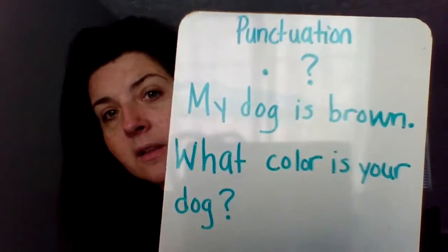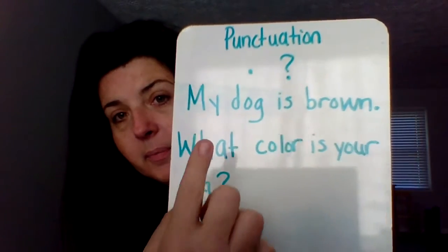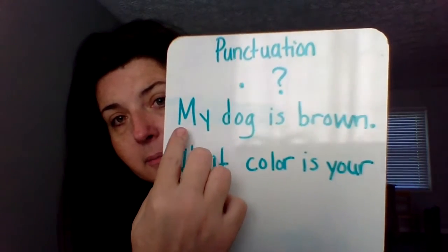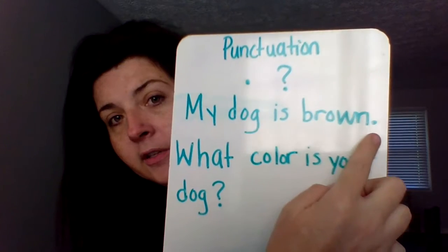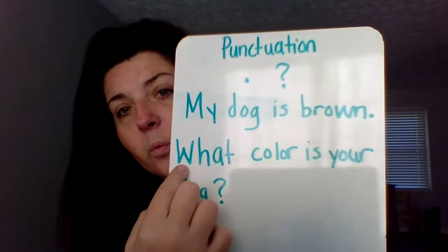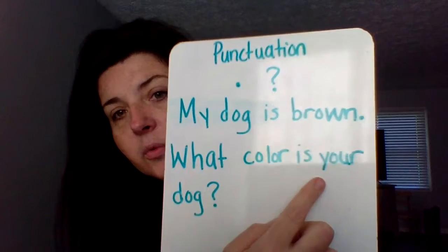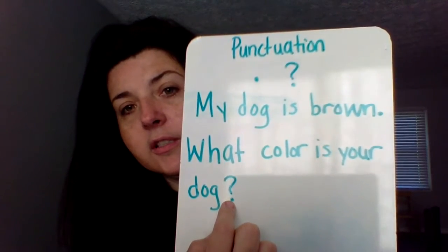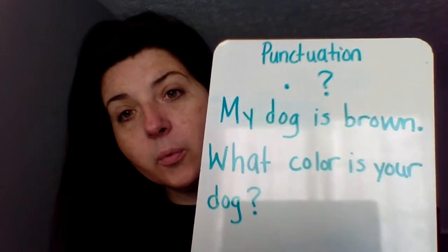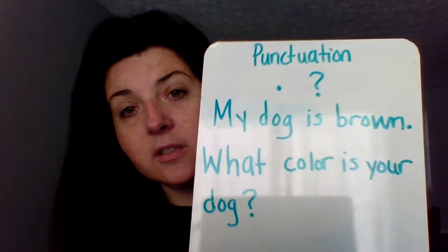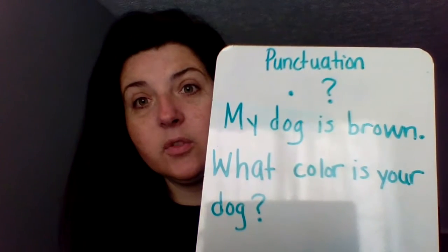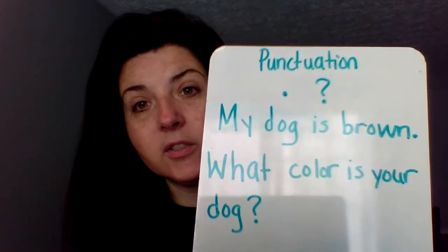Look at this board. My period is used in my thought: "My dog is brown." Period. "What color is your dog?" Question. Another way you can know it's a question is if you can answer it, or if someone is looking for an answer.